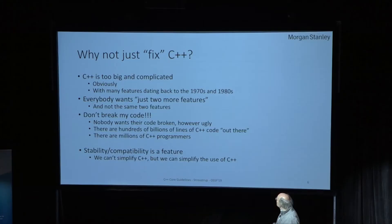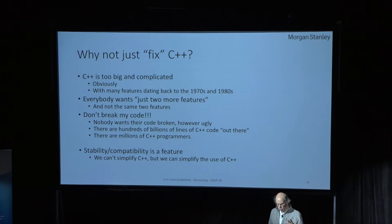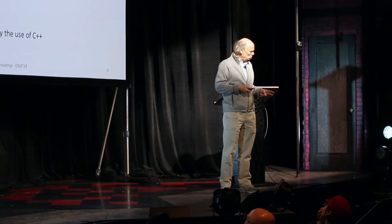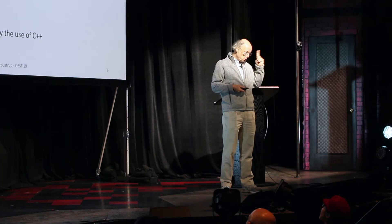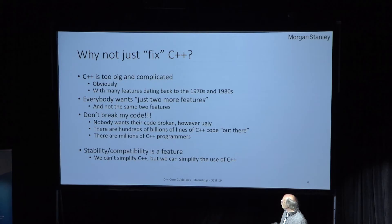One of the questions I'm asked quite often is: why don't you just fix C++? The answer is, it's big and complicated and we would like it simpler. But everybody wants a simpler language with just two more features, and they want a guarantee that you don't break their code. This is impossible. There are hundreds of billions of lines of code — it's a lot, and you don't change that. Furthermore, there's a lot of legacy stored in people's heads. So we can't simplify the language. We can simplify the use of the language.